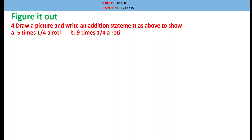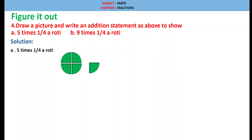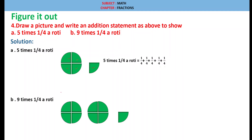Question 4: Draw a picture and write an addition statement to show 5 times 1/4 of a roti and 9 times 1/4 of a roti. Solution: Five times 1/4 of a roti equals 1/4 + 1/4 + 1/4 + 1/4 + 1/4. For nine times 1/4 of a roti, there are nine one-fourth pieces — counting one through nine — so 1/4 is repeated nine times.